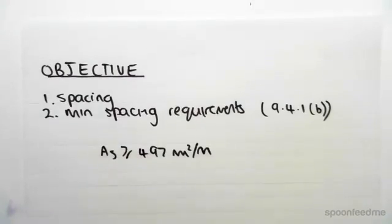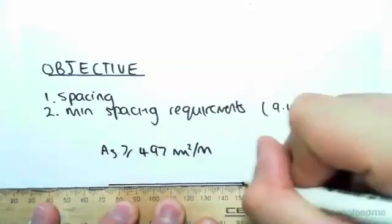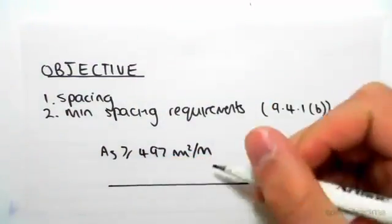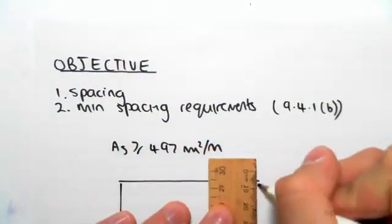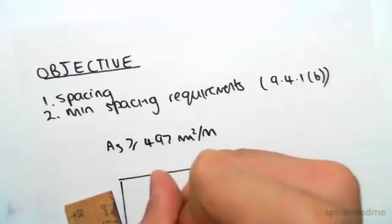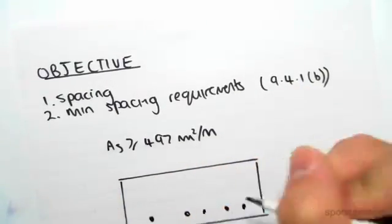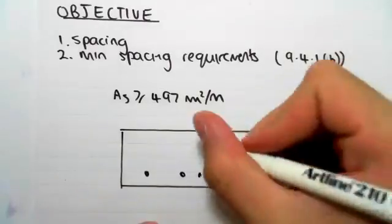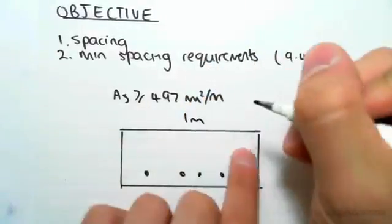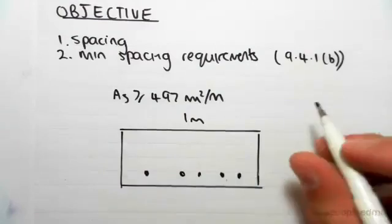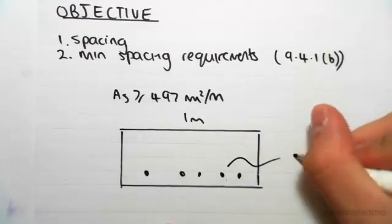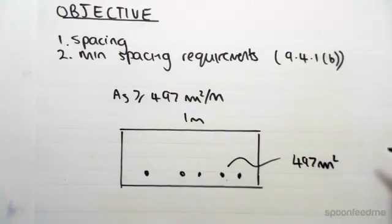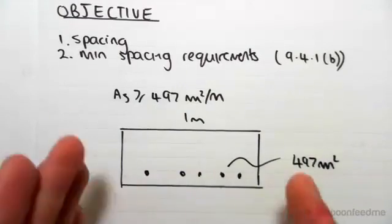So let's just quickly look at how the spacing is going to work. If I give you a little drawing of our slab, we're going to have bars like this and we're going to look at one meter of slab. Now in this one meter, this needs to be 497 millimeters squared of steel. That's how much steel we need in this one meter.